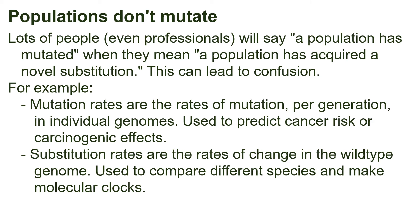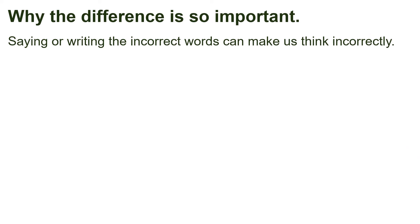Is this something that students and regular biologists need to worry about? Obviously the answer is yes. The reason to worry is because saying or writing the incorrect words can make us think incorrectly — our thoughts are shaped by our words. When you can't find the right word for something, your brain comes to a halt, because our brains use words to think. The entire field of propaganda is based on guiding which words people use in order to control how they think. If we use the wrong words, we think the wrong way — we propaganda our own brains into thinking incorrectly.